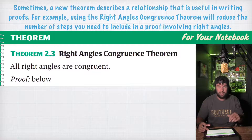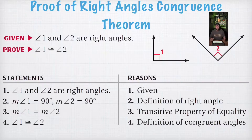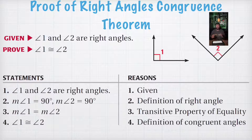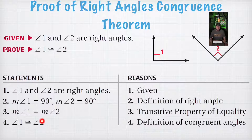We're actually going to look at the proof — we're not going to do it, we're just going to look at how that works. What that really says is we get to use the right angles congruence theorem, and when we use it, it cuts out these four steps you would have had to use to prove that something is congruent. But because we have that, now all four of these steps will become one step.